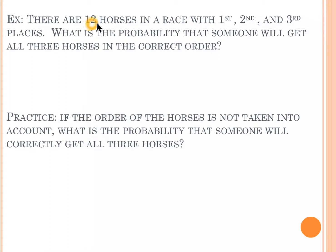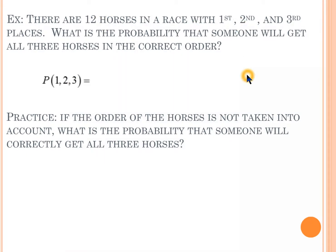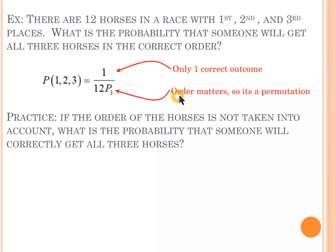In a race with 12 horses, what is the probability that someone correctly predicts all three podium positions in the correct order? Since order matters, this is a permutation. There are 12 pick 3 total ordered outcomes, but only one of those outcomes is correct. So the probability is 1 divided by 12 pick 3.